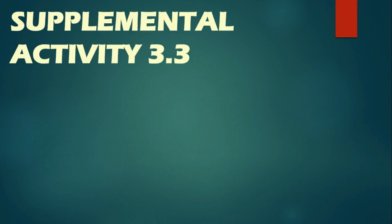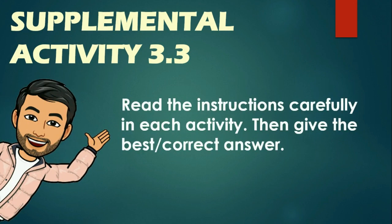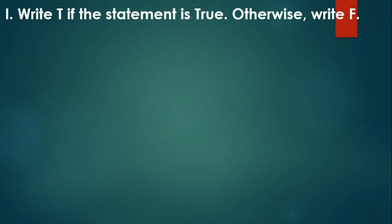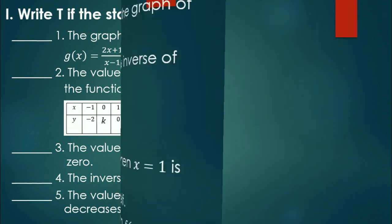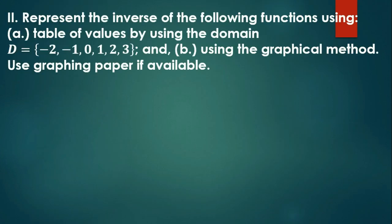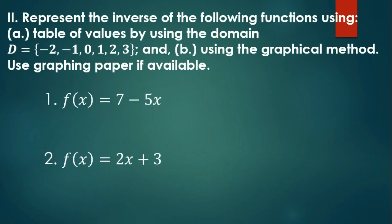For the Supplemental Activity 3.3, read the instructions carefully in each activity and give the best or correct answer. Part 1: write T if the statement is true, otherwise write F. Part 2: represent the inverse of the following functions using a table of values with domain negative two, negative one, zero, one, two, and three; and also using the graphical method — use graphing paper if available. Submission of all outputs will be on Friday.